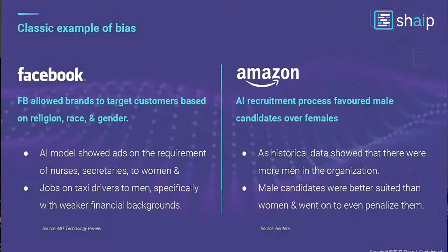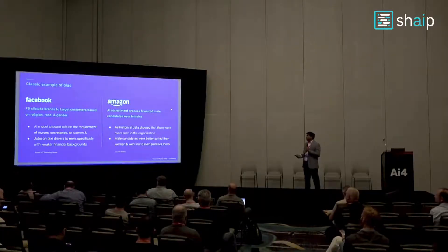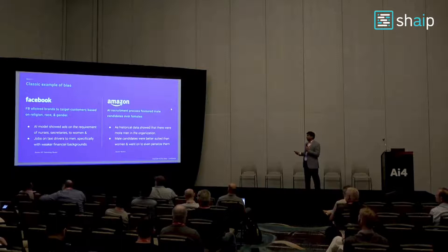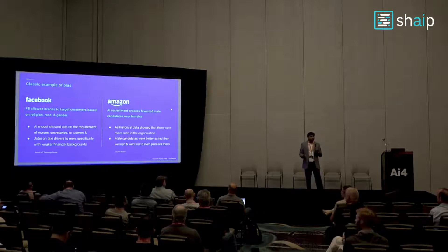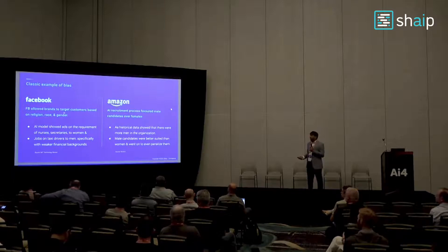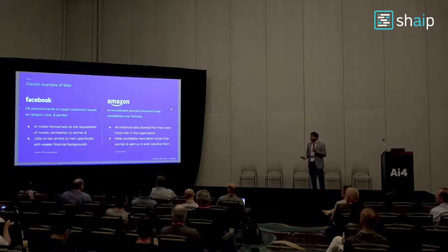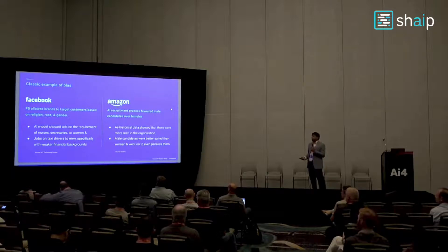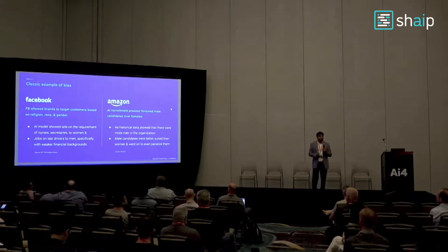Here are some classic real-world examples of bias. Amazon, while building their AI recruitment tool, favored male candidates over female candidates because historical data showed more men in the organization. Some outputs even penalized women for certain résumé entries. Similarly, Facebook allowed brands to target customers based on religion, race, and gender — its AI models showed nursing and secretary ads to women, and taxi driver jobs specifically to men with weaker financial backgrounds. All this showcases the importance of having a diverse, unbiased dataset.